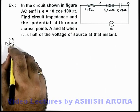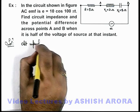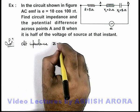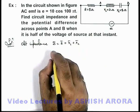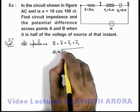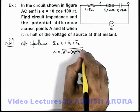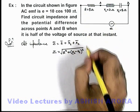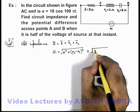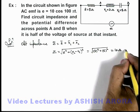The first thing we can directly calculate is the circuit impedance. In phasor form, Z = R + XL + XC, and in magnitude, Z = √(R² + (XL - XC)²). Here XL - XC = -6, so the difference is 6, and R = 8. This gives Z = √(8² + 6²) = √(64 + 36) = 10 ohms, which is the answer for circuit impedance.